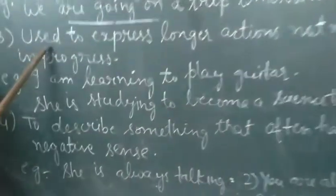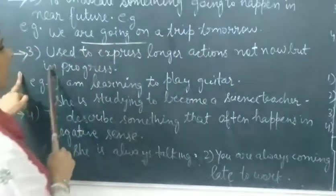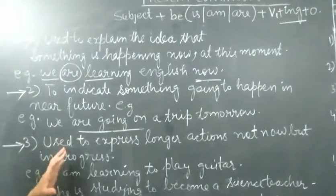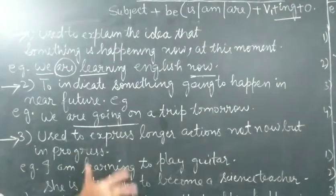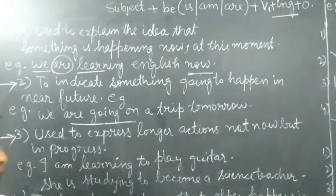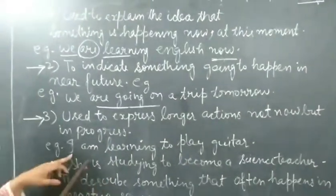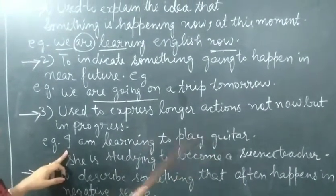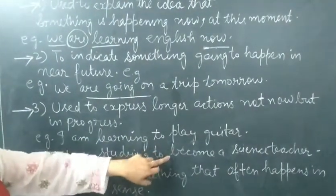Then, third use. Use to express longer actions. Not now, but in progress. Un actions ko express karne ke liye bhi hum use karte hain jo abhi kaafi samay baad jaakar complete honge. But, wo abhi progress mein hai. Abhi nahi ho raha hai. At present, wo action nahi chal raha. But, wo action abhi progress mein hai. For example, I am learning to play guitar. I am not playing guitar. But, I am learning to play guitar.